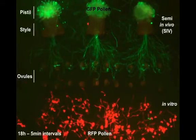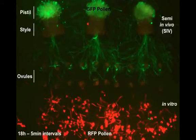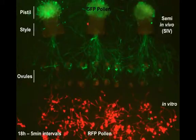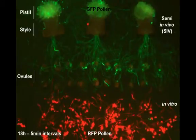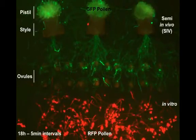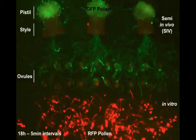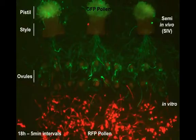The red pollen tubes grow slower, their direction is random, and when they near ovules, they grow past them and fail to respond to guidance cues being secreted from inside the ovule. So growth through the pistil changes the pollen tube and enables it to perform essential functions like finding ovules.